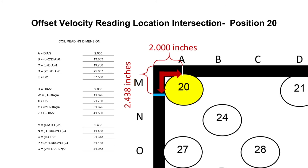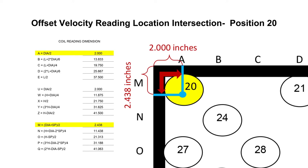The offset velocity reading location for position 20 is at the intersection of A and M. The value for A equals 2 inches and the value for M equals 2.438 inches. A measurement and marking for A is 2 inches from the left towards the center, and for M, 2.438 inches from the top towards the bottom. Therefore, the position 20 offset velocity reading location is at the intersection of A, 2 inches from the left to center, and M, 2.438 inches from top to bottom.